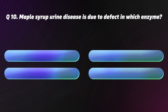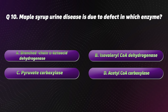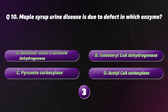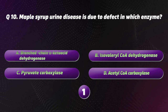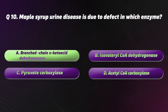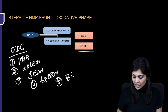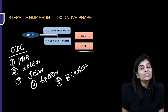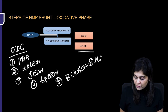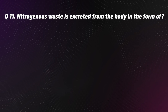Question 10. Maple syrup urine disease is due to a defect in which enzyme? Options: A. Branched-chain alpha-ketoacid dehydrogenase, B. Isovaleryl-CoA dehydrogenase, C. Pyruvate carboxylase, D. Acetyl-CoA carboxylase. The correct option is A, Branched-chain alpha-ketoacid dehydrogenase. The defect of branched-chain ketoacid dehydrogenase of branched-chain amino acid metabolism causes maple syrup urine disease.